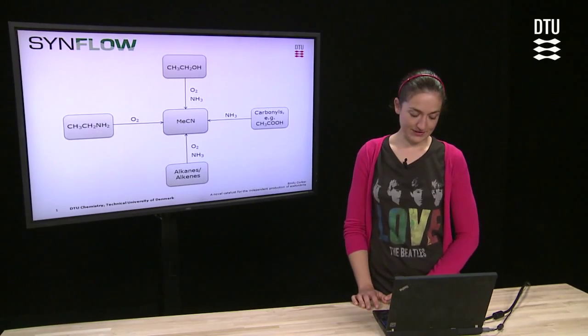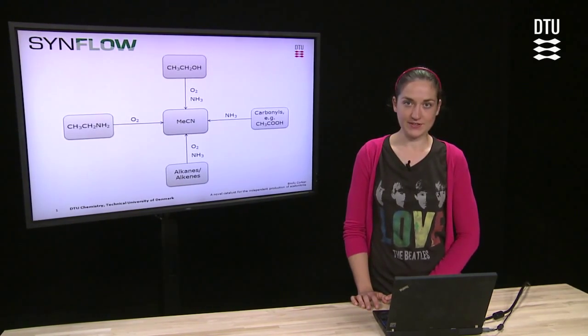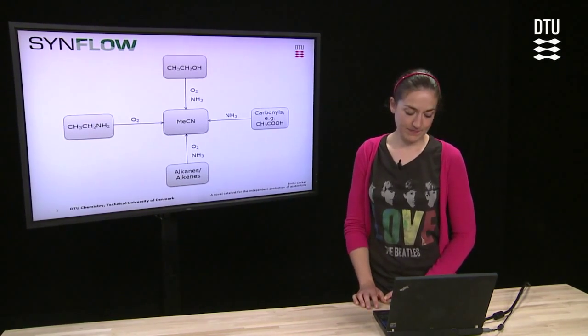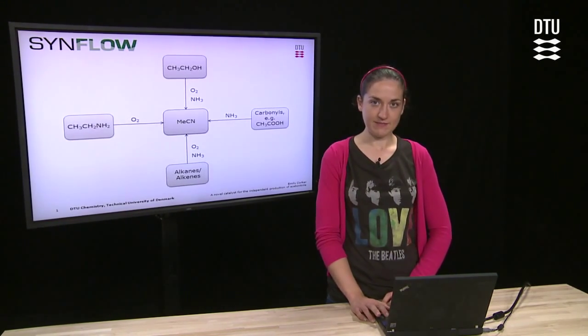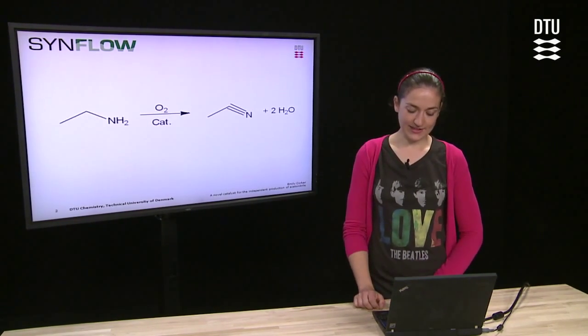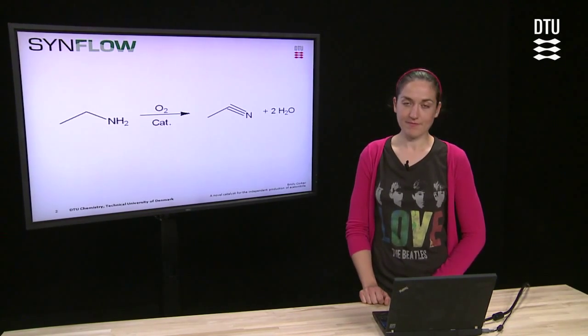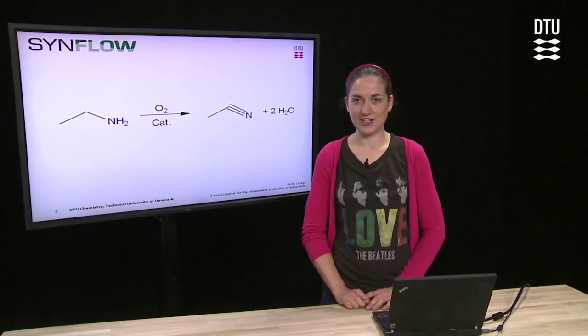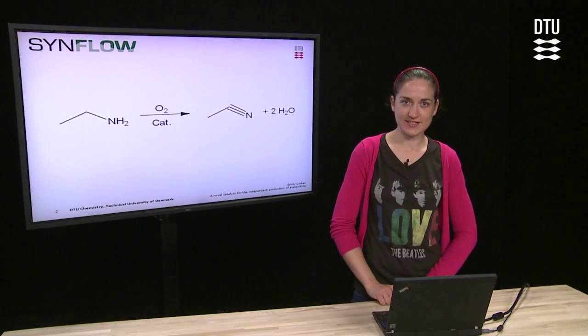Whatever the starting material, it's important to identify a suitable catalyst for the transformation. The first route that I've studied is the catalytic production of acetonitrile from ethylamine via oxidative dehydrogenation using ruthenium catalysts.